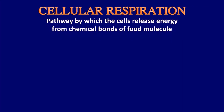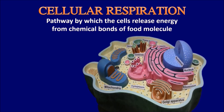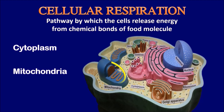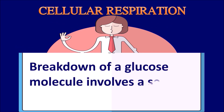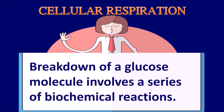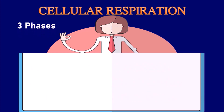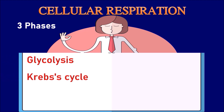Cellular Respiration refers to the pathway by which cells release energy from the chemical bonds of food molecules. It does not occur in a single reaction. In eukaryotic cells, it occurs in both the cytoplasm and mitochondria. Breakdown of glucose molecules involves a series of biochemical reactions occurring in three phases: the first is glycolysis, the second is the Krebs cycle, and the third is the electron transport system.